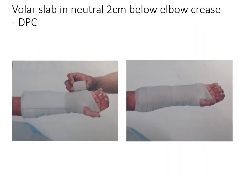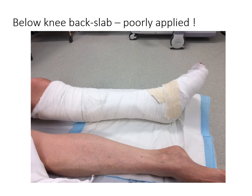Here are two pictures showing a volar slab in neutral going from two centimeters below the elbow crease to the distal palmar crease. This is a comfortable position with functional use of the hand and fingers possible.